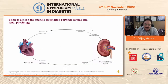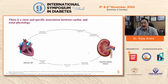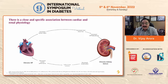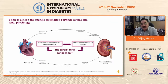There is a close and specific association between cardiac and renal physiology. In chronic heart failure, there is decreased cardiac output, decreased renal blood flow, decreased eGFR, and albuminuria, leading to progression of kidney disease. Kidney disease in turn causes decreased renal function, retention of sodium and water, decreased cardiac performance, and precipitation of heart failure. This is the cardiorenal connection.